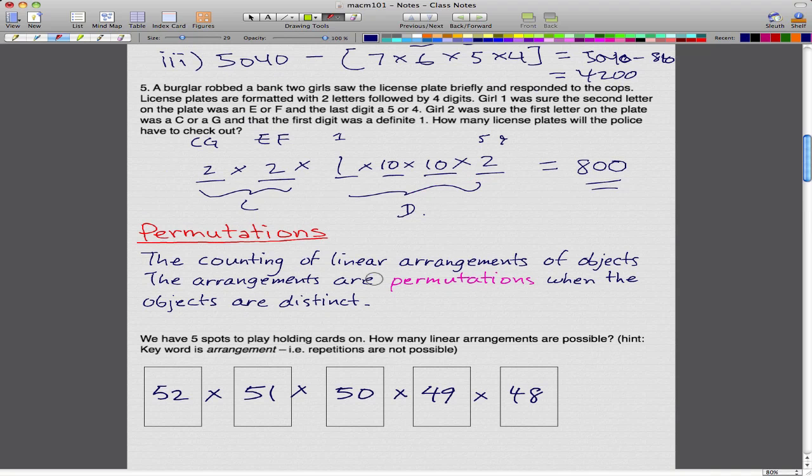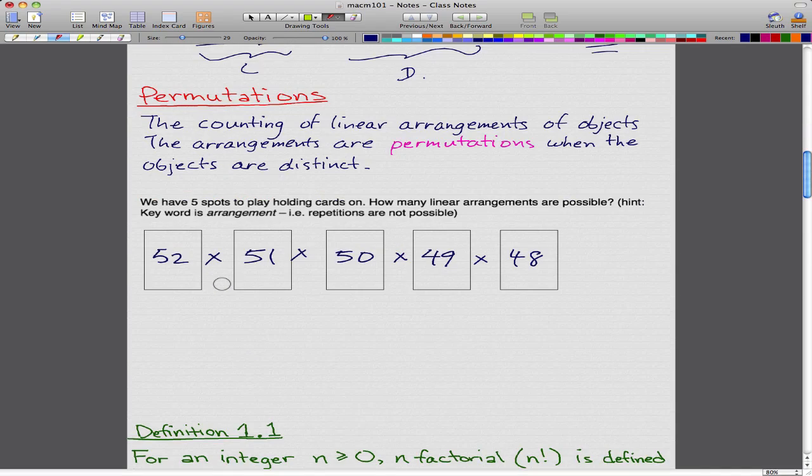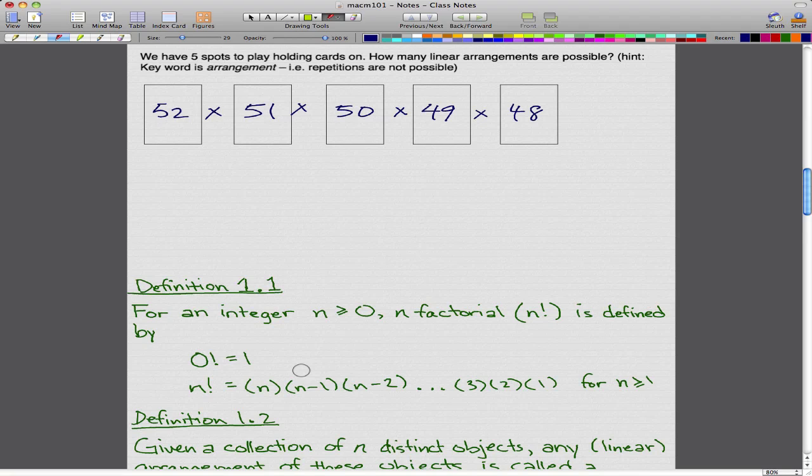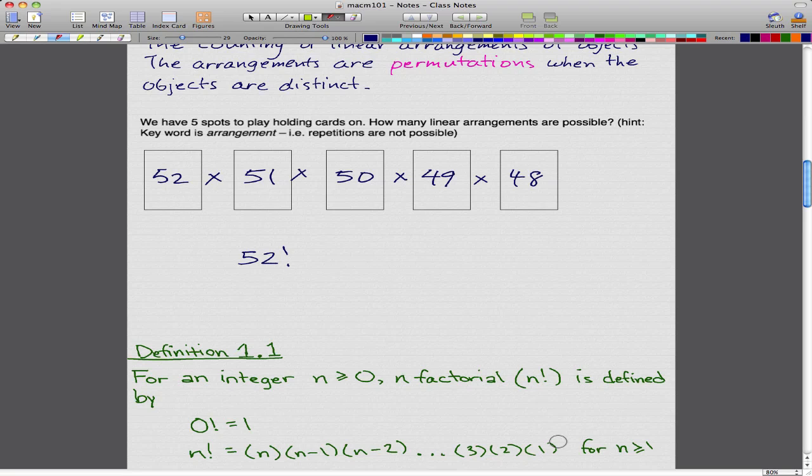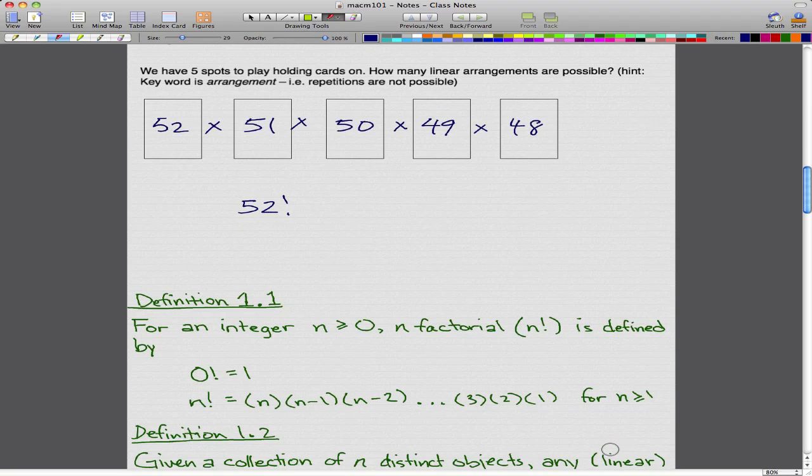This is really similar to what we did in the past videos. Here's our first definition. For an integer n greater than or equal to 0, that is n factorial, defined by 0! = 1. That's the factorial that you should have learned in high school. If we have n distinct objects, then the way we can place them is n factorial.